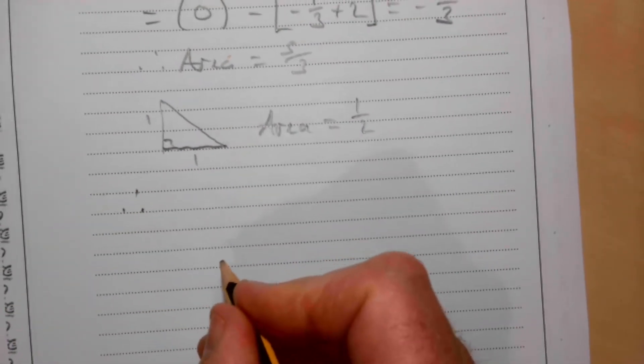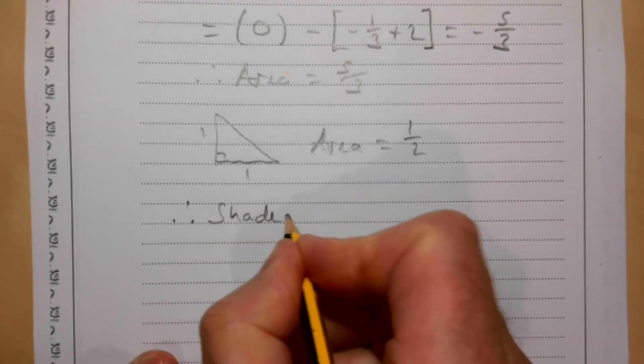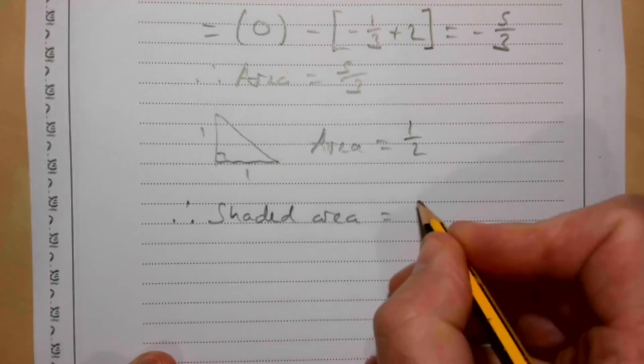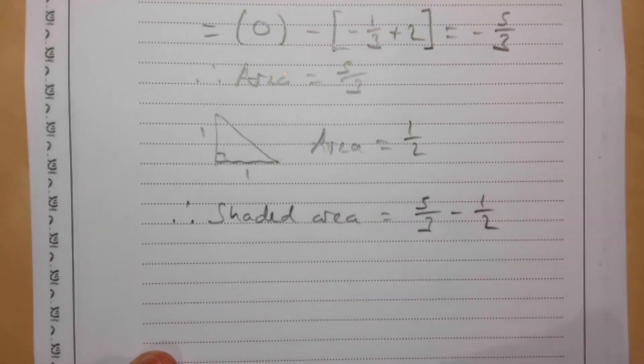Therefore our shaded area is going to be 5 over 3 take away a half.